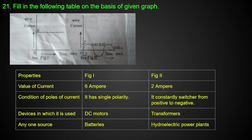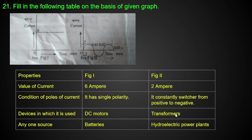Fill in the following table on the basis of the given graph comparing AC and DC. The value of current for DC is 6, and it is 2 for AC. DC is direct current with single polarity. AC is alternating current where the current direction changes — it constantly switches from positive to negative. Devices using DC include DC motors and batteries. Devices using AC include transformers, radios, and televisions.